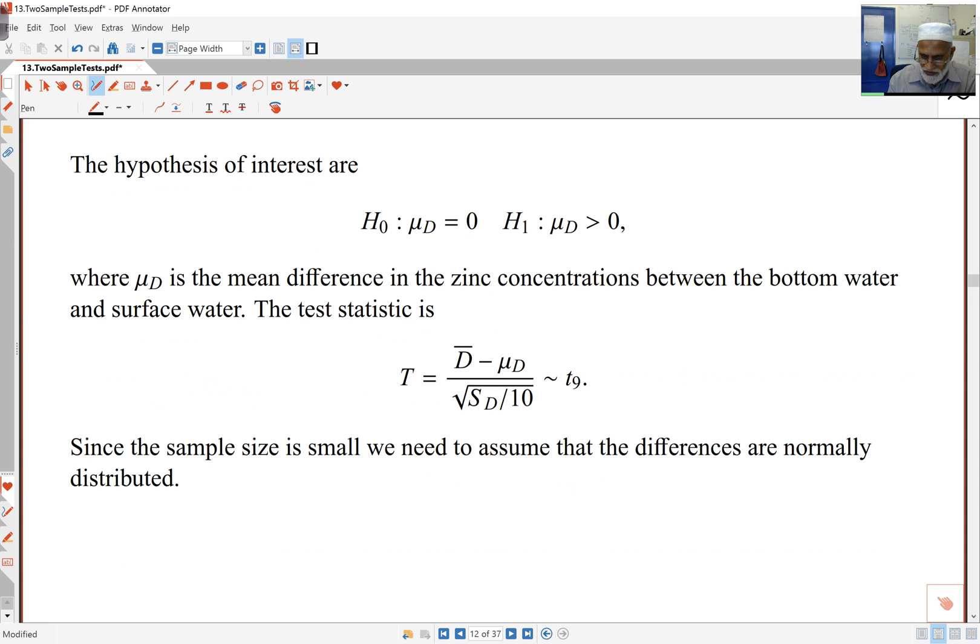So be careful. The way I subtracted, it was bottom minus the top, and I'm expecting that it would be positive. So mu_d is bigger than 0. My test statistic, again, I've got the same error over here. Excuse me. So I require the s_d to be outside, s_d over the root of 10. And that's going to be t_9. The sample size here, sample size is small. So I have to assume that my differences are normal. I am not interested in the actual data, the two, the surface and the bottom measurements. They don't have to be normal, but the differences have to be normal. That's what I'm after over here.